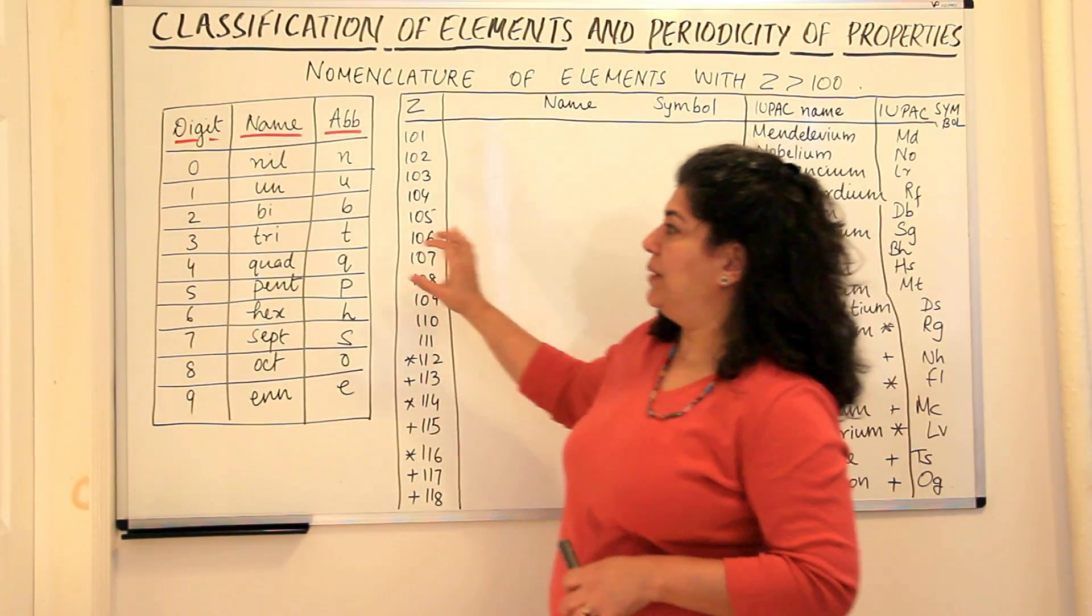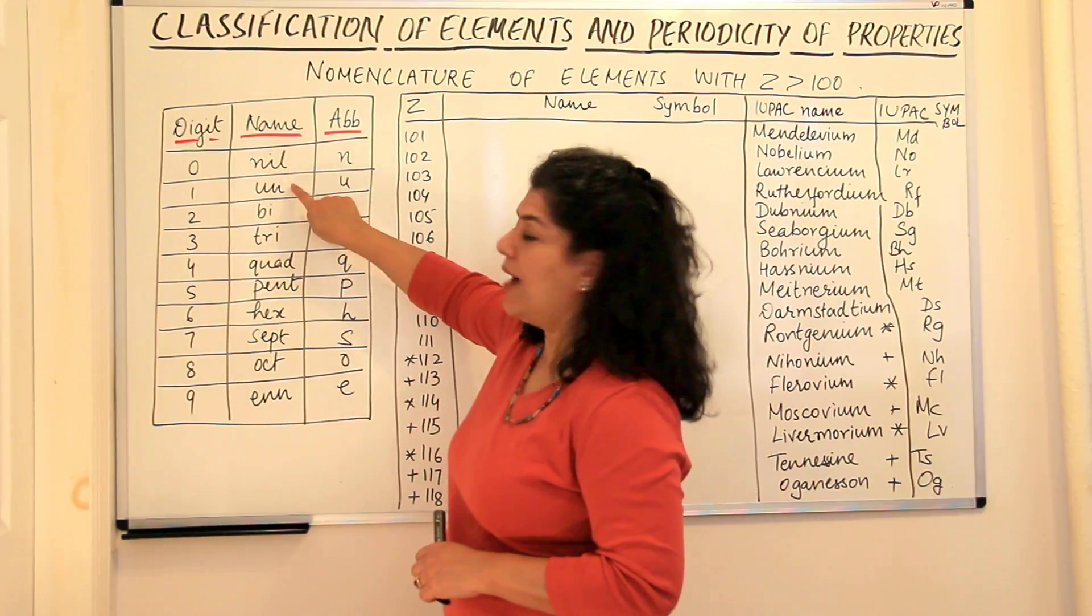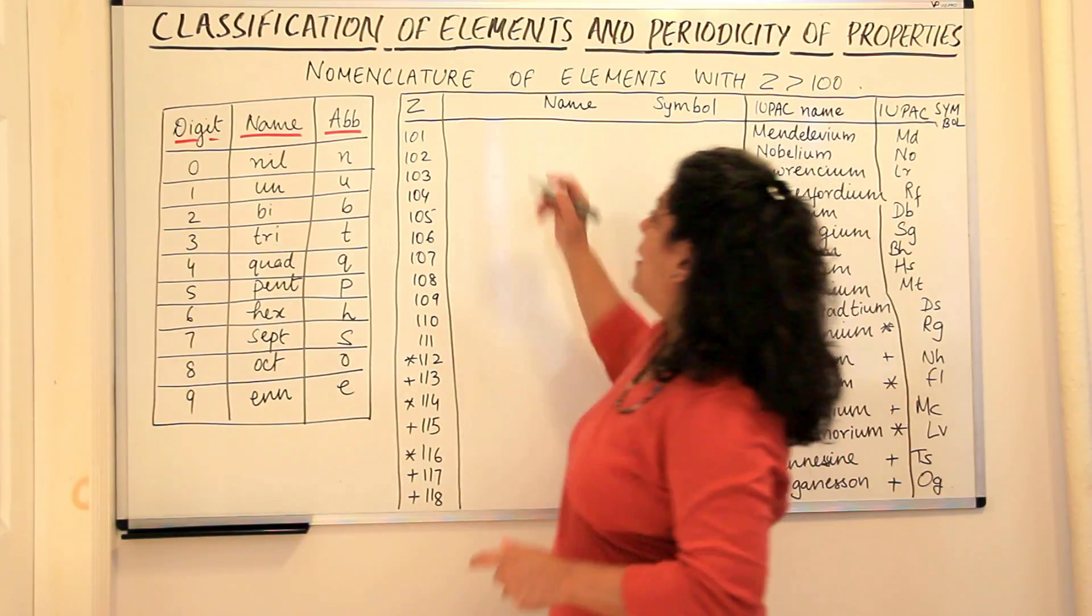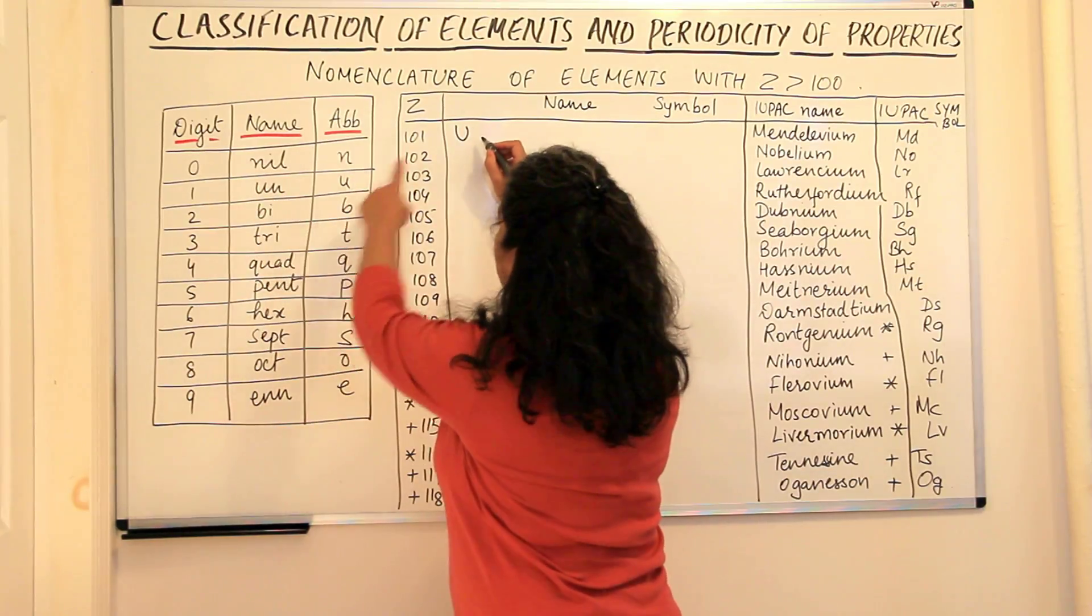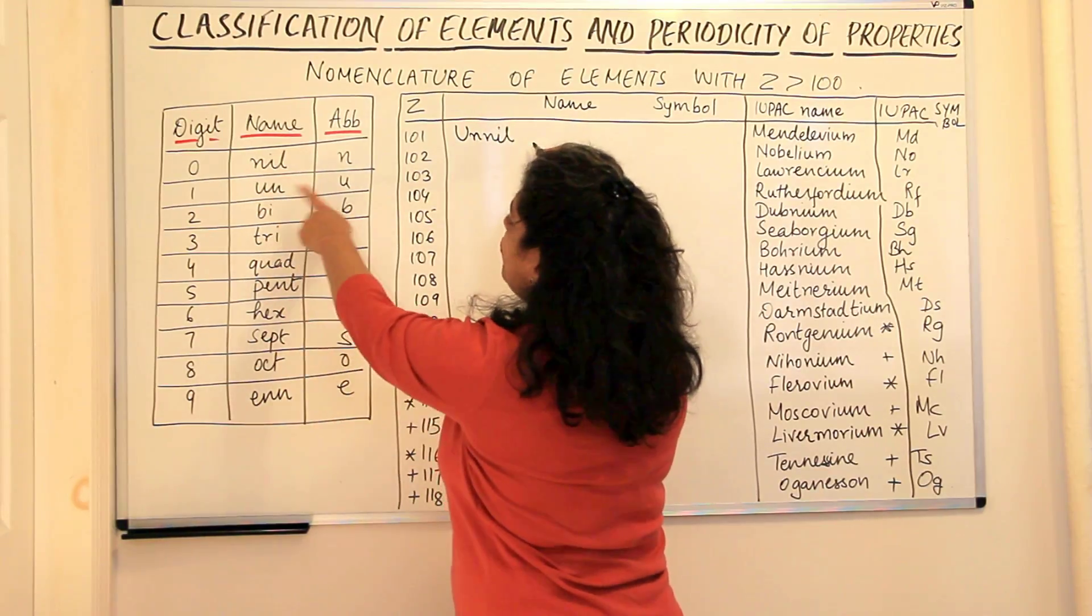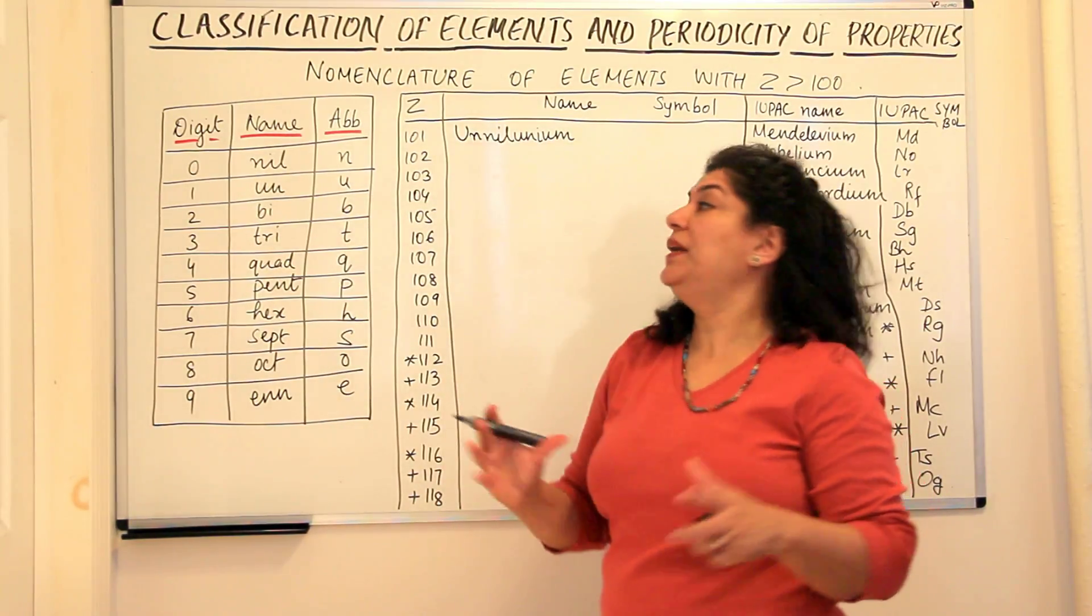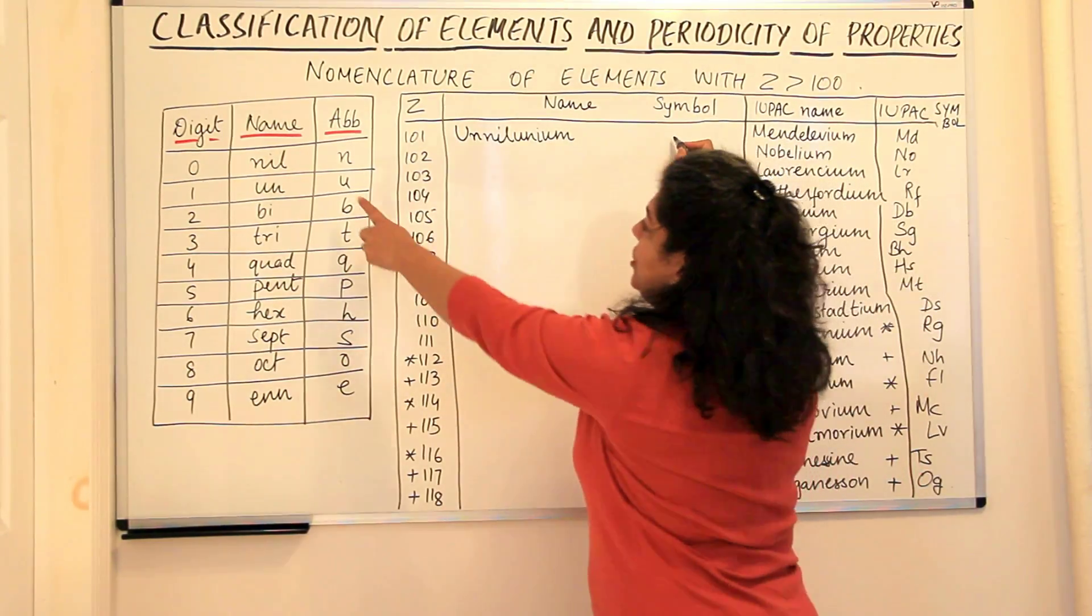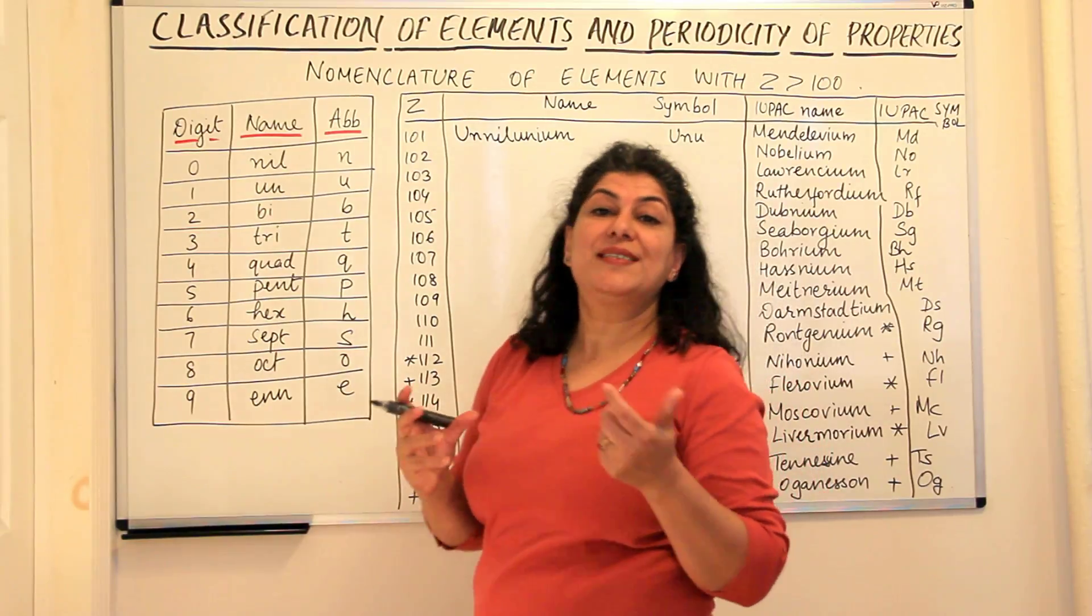So when you're writing the name of an element, for example it is a hundred and one, one, zero, one, you write un, nil, un and you end it with ium. So it is a hundred and one. The name always starts with a capital letter. It is one is un, zero is nil, so it will be nil and one is again un, so it will be un and you end it with ium. So the name of this element would be unnilunium. And what would the symbol be then? U is for un, N for nil and U. UNU will be the symbol of this element.